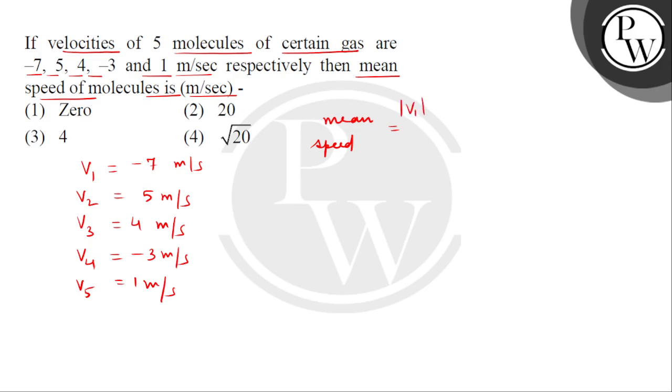Let's find the mean speed by considering the speed of these molecules. First, we have to find out the mean speed, which means the magnitude of the velocity. We will add them and divide by 5. So this is 7 plus 5 plus 4 plus 3 plus 1, and this whole is divided by 5.